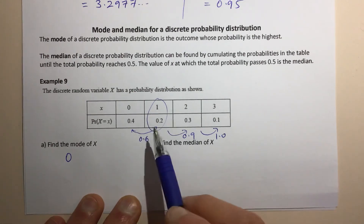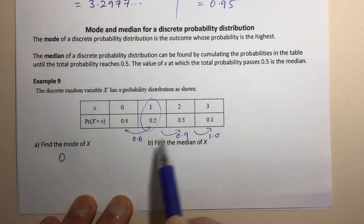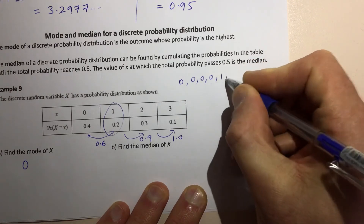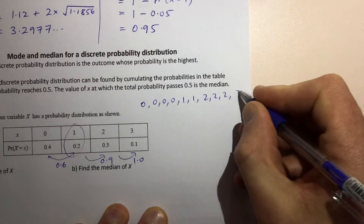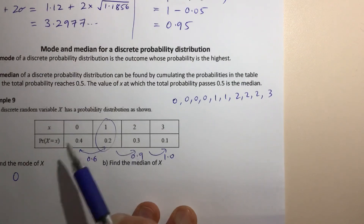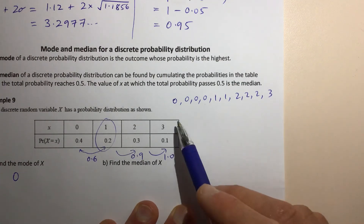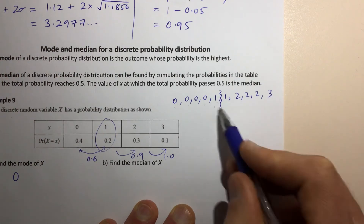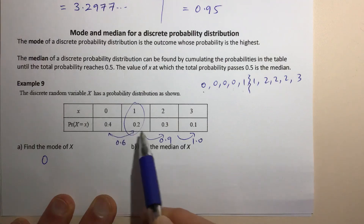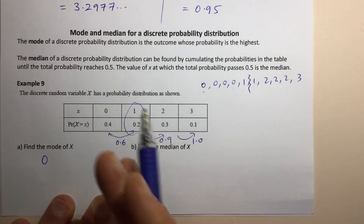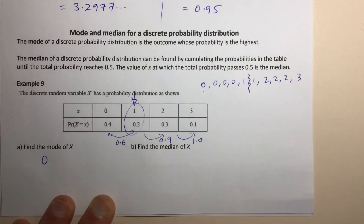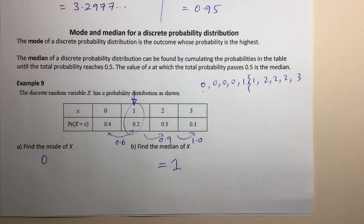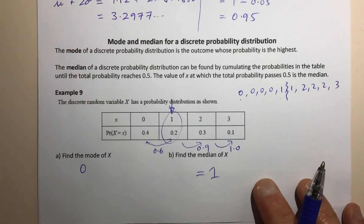Another way to think of it: imagine these probabilities came from a list of 10 numbers — in order: 0, 0, 0, 0, 1, 1, 2, 2, 2, 2, 3. Finding the middle value gives five numbers below and five above, and quite clearly the median is 1. We've done the equivalent using probabilities by adding them up until we reach 0.5, and where we reach 0.5 is in the interval where X equals 1. So the median of X is 1. It's not as common that you'll have to find the mode or median, but that's how you do it.